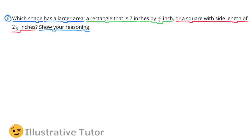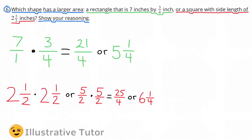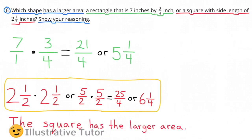Number 6. Which shape has a larger area: a rectangle that is 7 inches by 3 fourths of an inch, or a square with side length of 2 and a half inches? Show your reasoning. 7 inches can be represented as 7 over 1, and 7 over 1 times 3 fourths equals 21 fourths, or 5 and 1 fourth square inches. 2 and a half times 2 and a half is the same as 5 halves times 5 halves, which equals 25 fourths, or 6 and 1 fourth square inches. The square has the larger area, because 6 and 1 fourth is greater than 5 and 1 fourth.